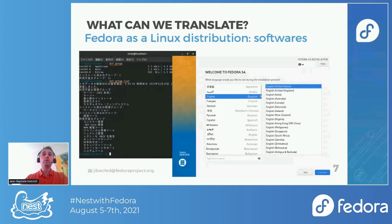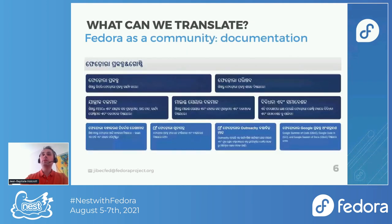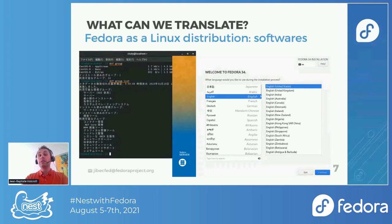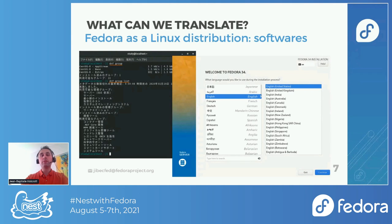The third aspect in which you can contribute in terms of localization is what we ship in Fedora as a Linux distribution. The release cycle and publication are not the same whether you are talking about documentation, the website, or software embedded in a major Fedora release. On the left-hand side you have DNF, the packaging tool of Fedora, and on the right-hand side you have the installer, which is specific to Fedora. You can see this installer is translated in many languages, which is very convenient for users. These are the two worlds we contribute to as a Fedora translation community.